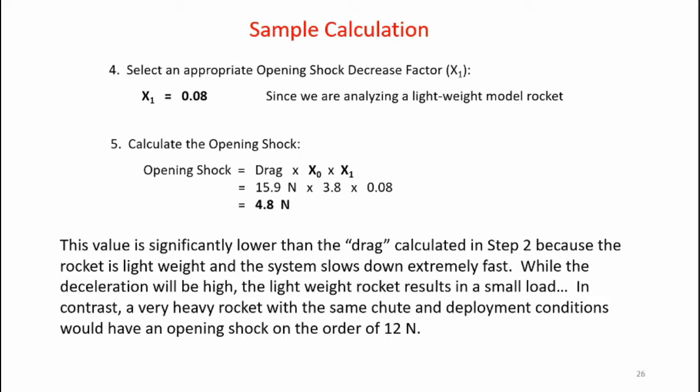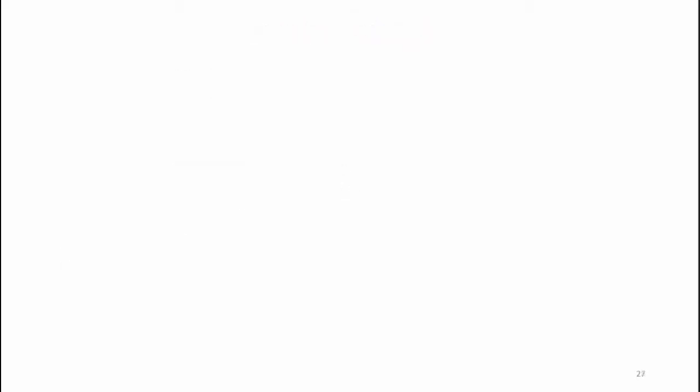In contrast, a very heavy rocket with the same chute and the same deployment conditions would have an opening shock on the order of 12 newtons. There are a number of ways to reduce opening loads and attenuate the shock loads during parachute deployment. Let's take a look at some simple techniques.